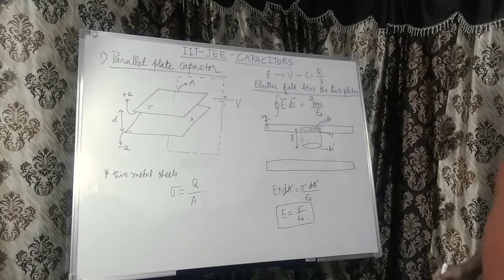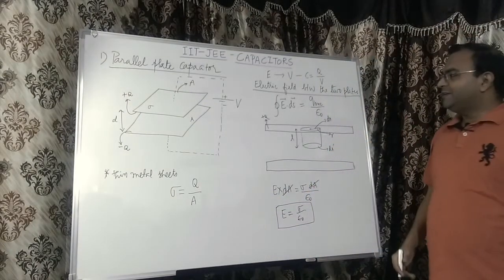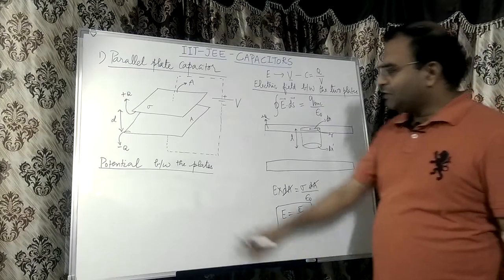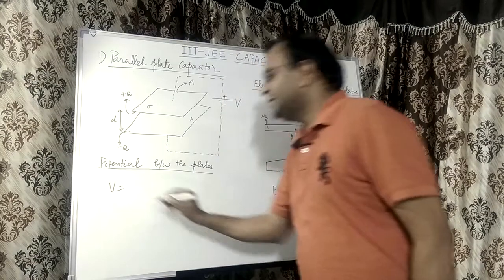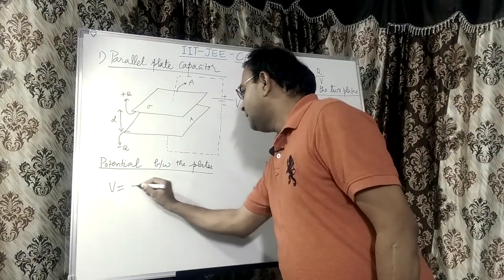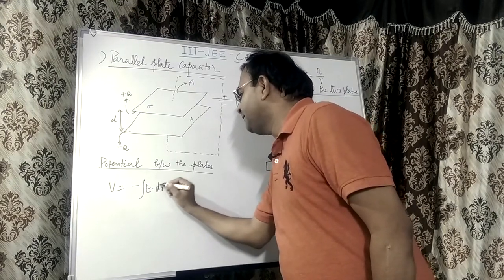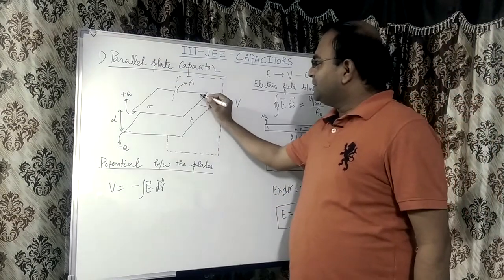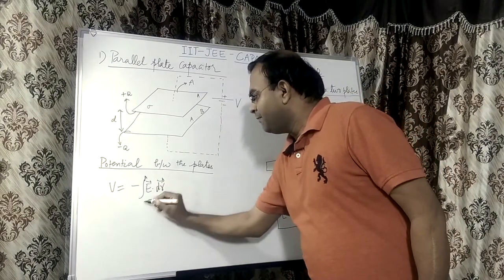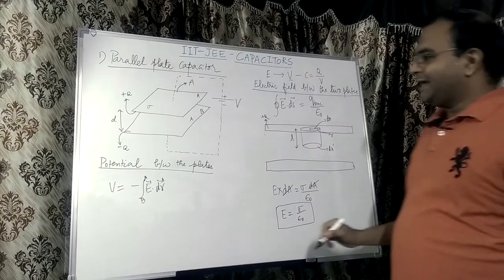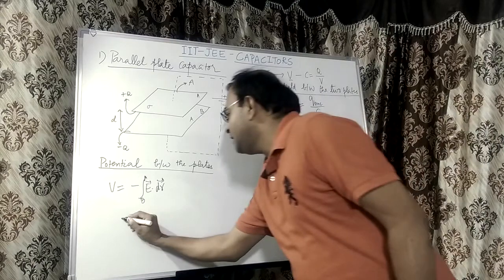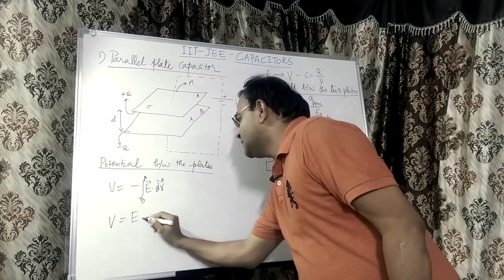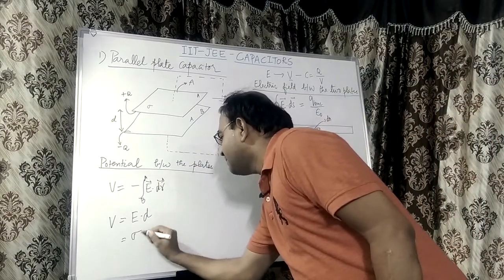This is the result for the electric field, which we will now use. Next, we calculate the potential — which is our second step. The potential difference between the two plates is given by V equals negative of the integral of E dot dr from plate A to plate B. Since E is constant, we can directly write V equals E times d, giving V equals sigma over epsilon naught times d.